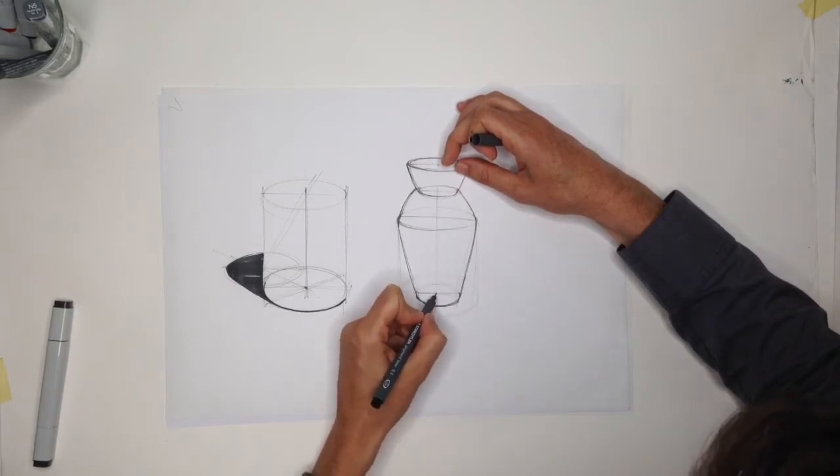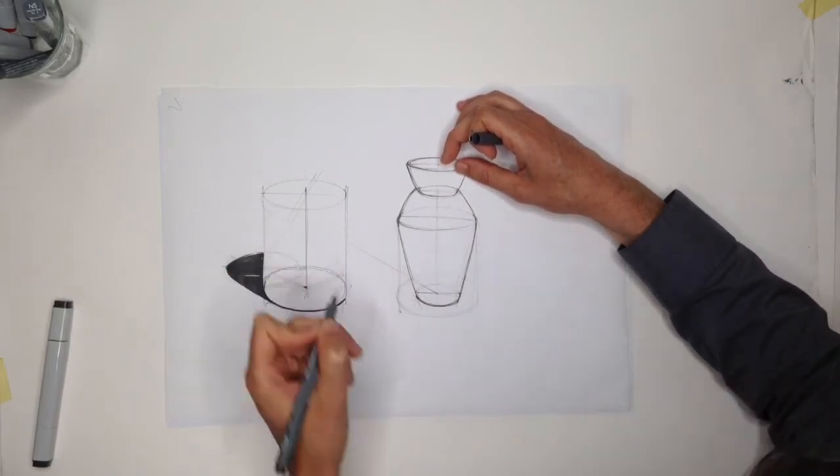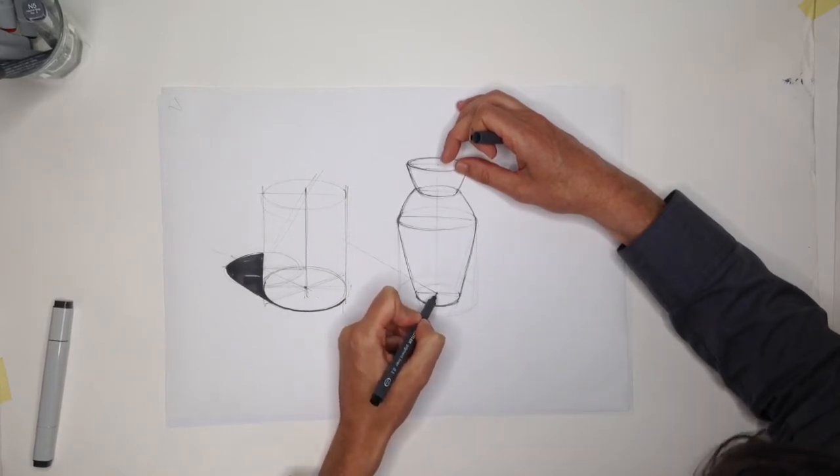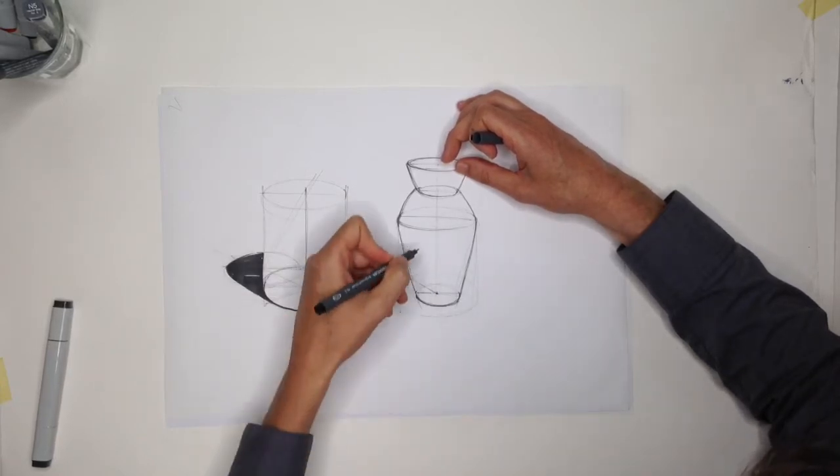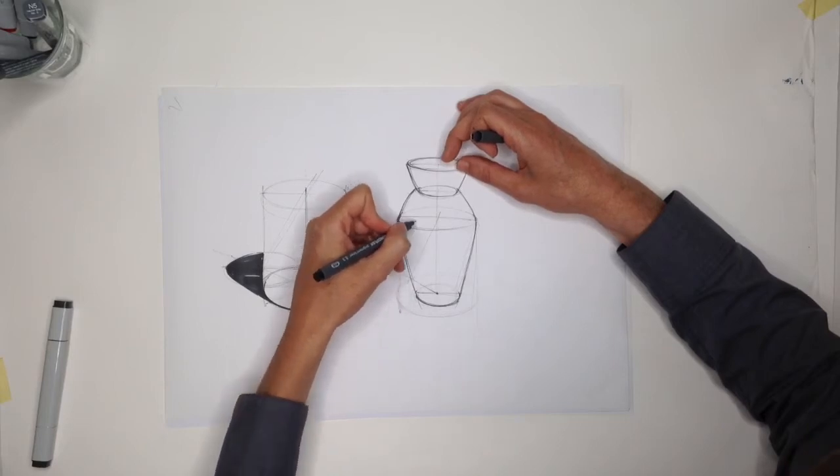And the first thing of course again is your light direction. You draw a line from the ground plane in your light direction, and then you draw your light angle lines from each defining ellipse in your vertical plane.